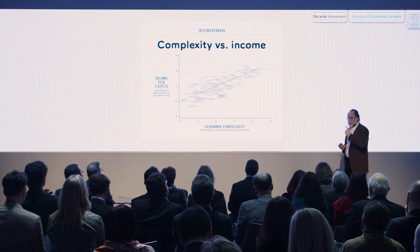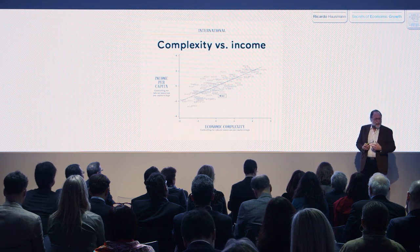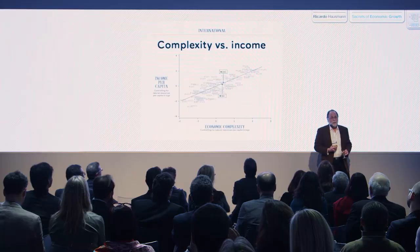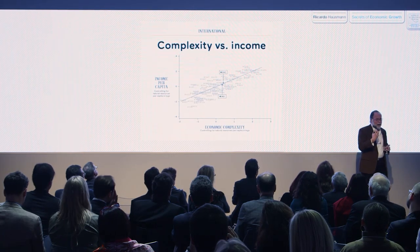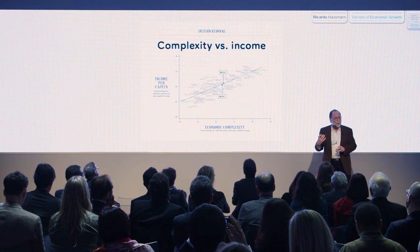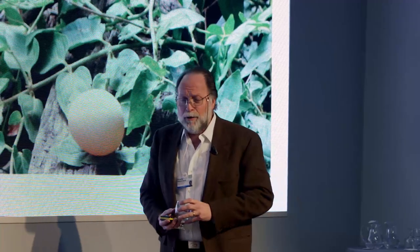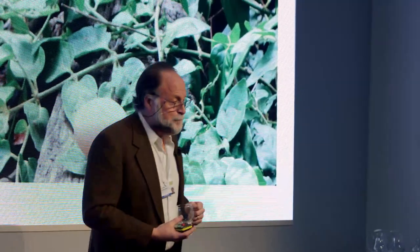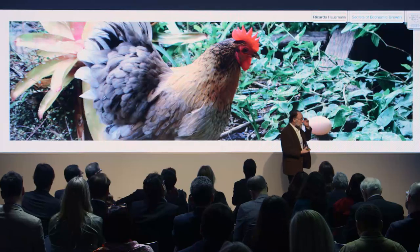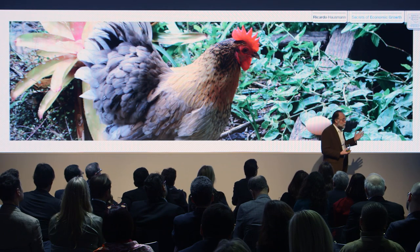Here is India. The theory would say: how is India so poor given how much it knows how to make? Well, maybe that's the reason why India is growing so fast — because it already has what it takes to be richer. The idea is that this metric of how much you know may drive where your country is going to be — how rich you are going to be. We now understand that the secret of growth is to get more letters and to express them in more words and in longer words.